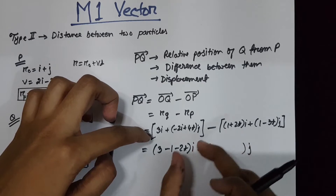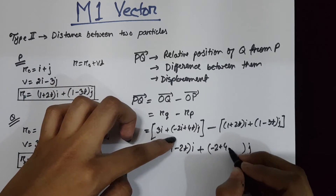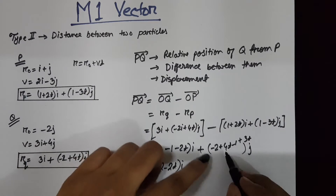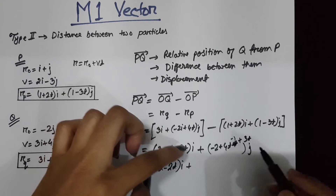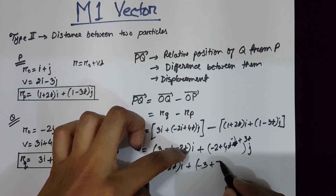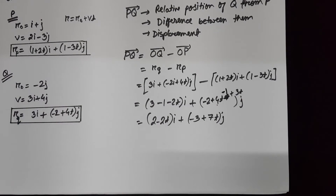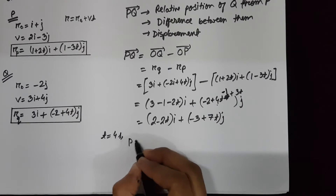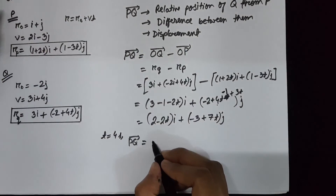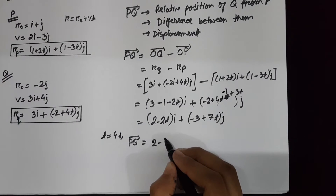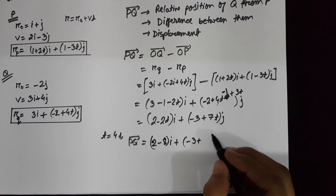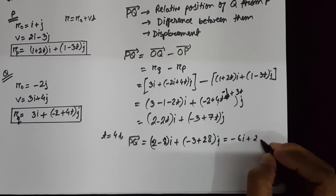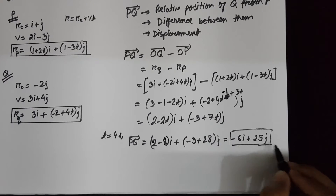Similarly, the j-coordinate will be subtracted: (-2 + 4t) - (1 + 3t), giving PQ = (2 - 2t)i + (-3 + 7t)j. Suppose we need to find the distance between the two particles after 4 seconds. If t = 4s, then PQ becomes -6i + 25j. This is your displacement.